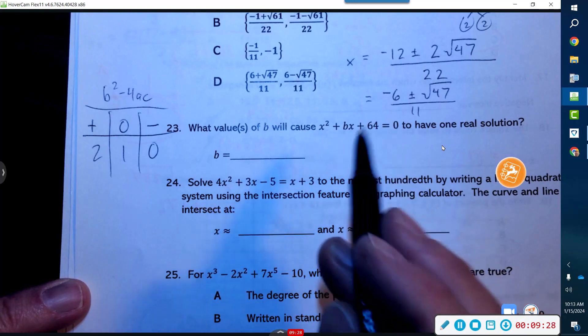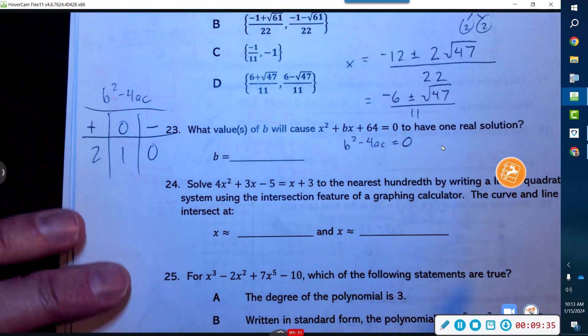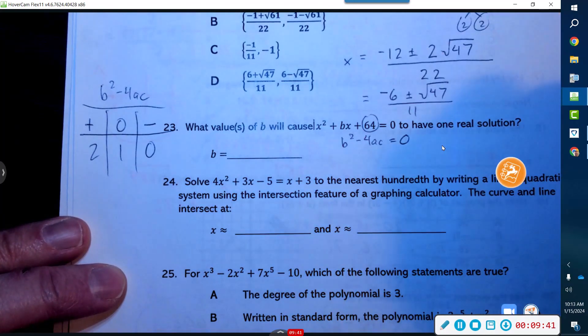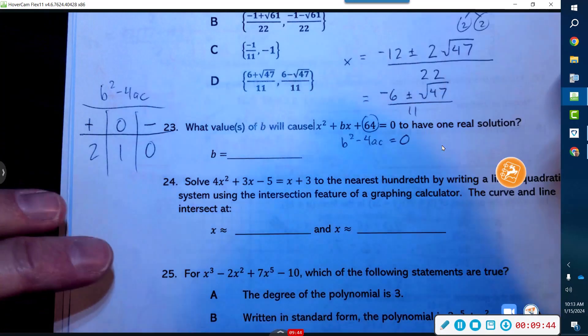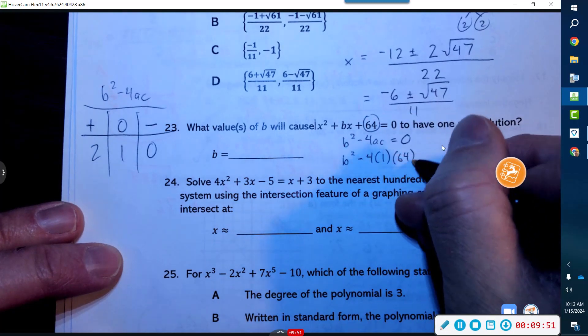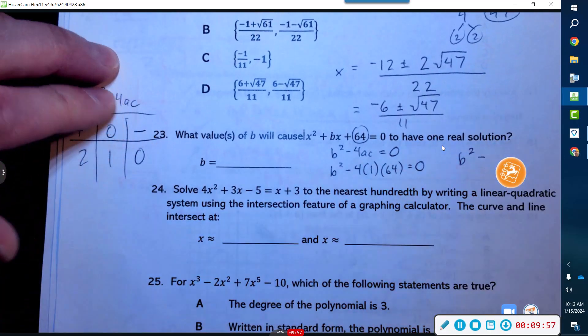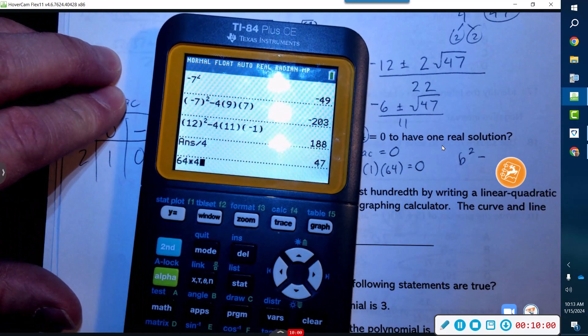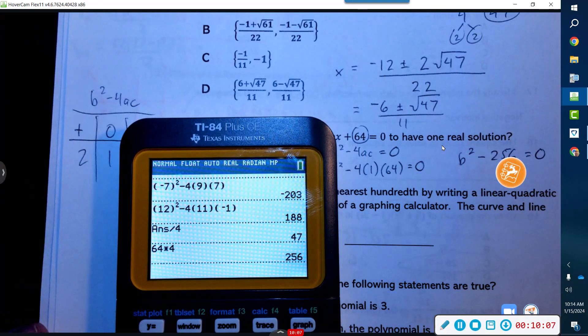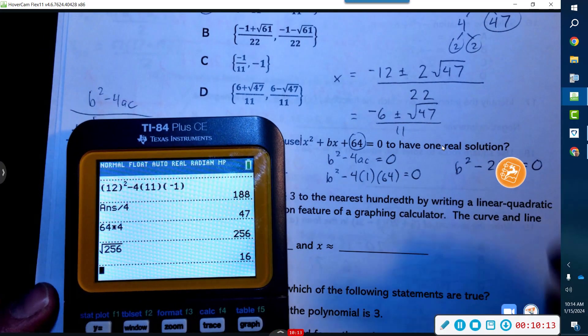So the discriminant of this guy has to equal zero. This is good because what it's saying is b² − 4ac has to equal zero. Now what we have here is we know a is 1 and we know c is 64; we just don't know the b. So b² − 4 times 1 times 64 has to equal zero. So b² minus—I don't trust myself but it's 64 times 4—256 equals zero. Now 256, if I'm not mistaken, is a perfect square.